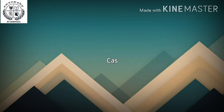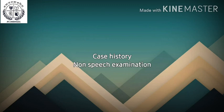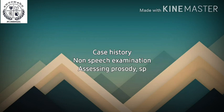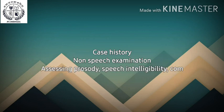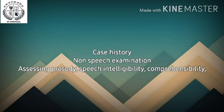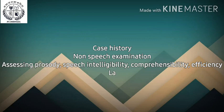Assessment procedures: Case history includes onset and course of symptoms, associated deficits, medical procedures and medication, review of auditory, visual, motor, cognitive, language and emotional status, education, vocation and cultural backgrounds, patient and family report, cranial nerve examination, observation of facial and neck muscle tone, assessment of sustained vowel prolongation, alternating motion rates, and sequential motion rates — all done under non-speech examination.